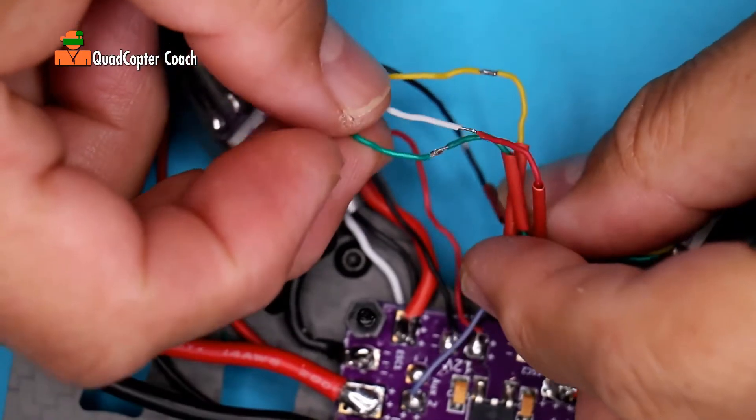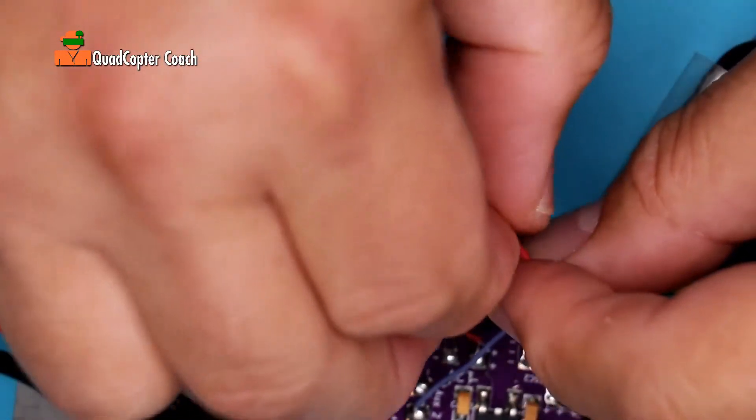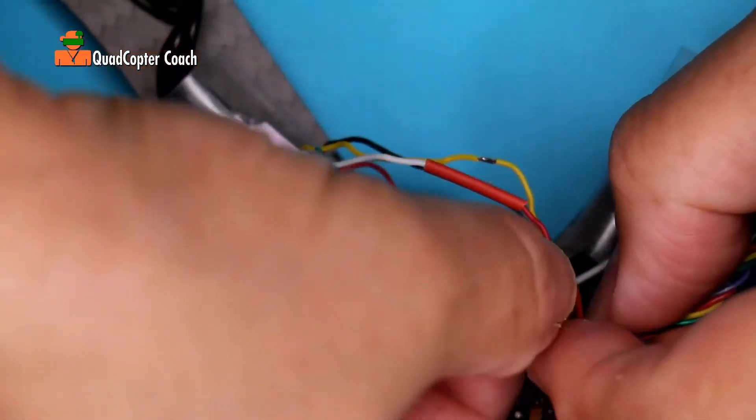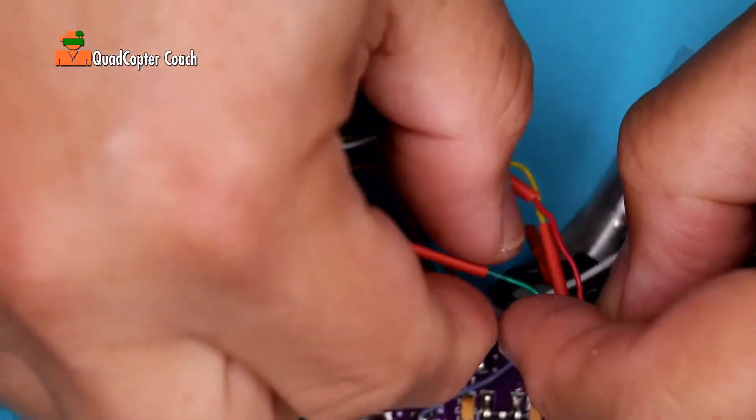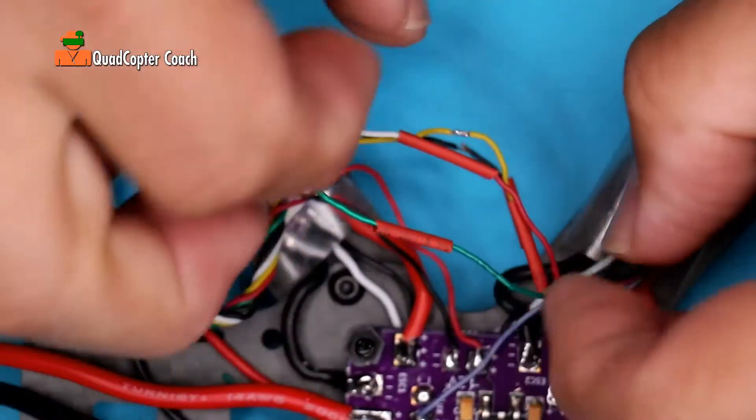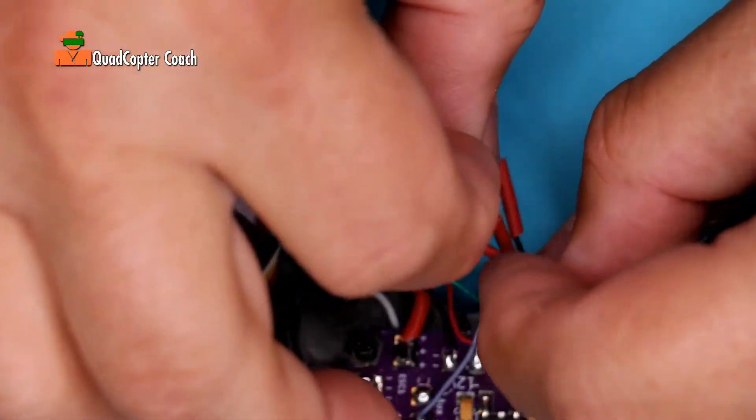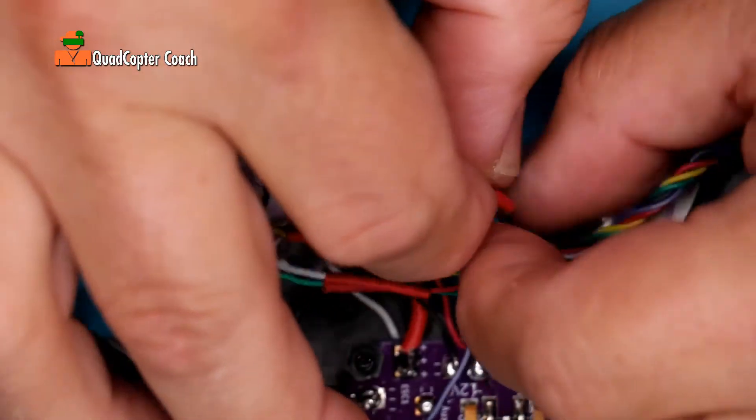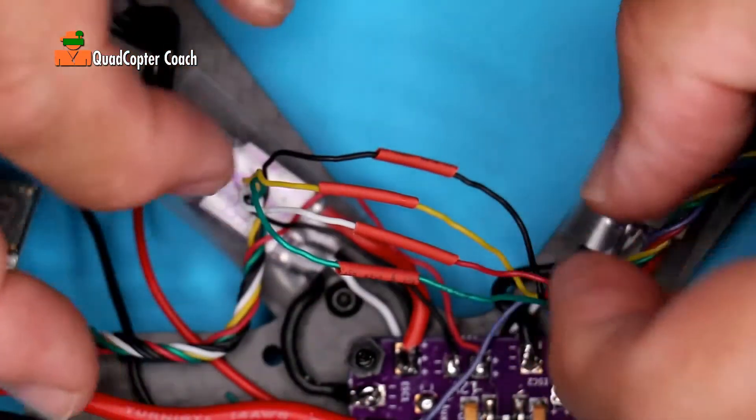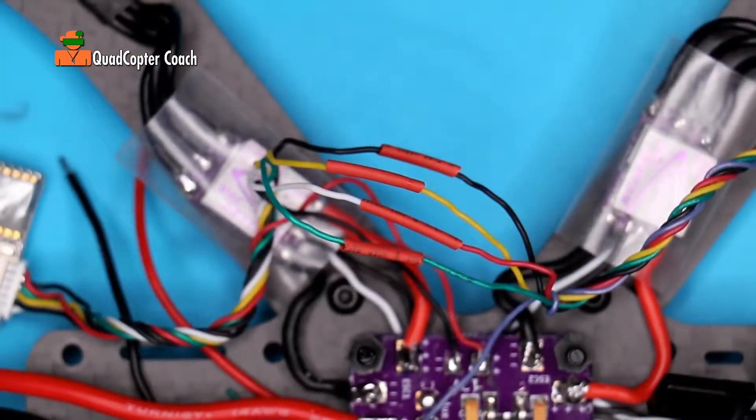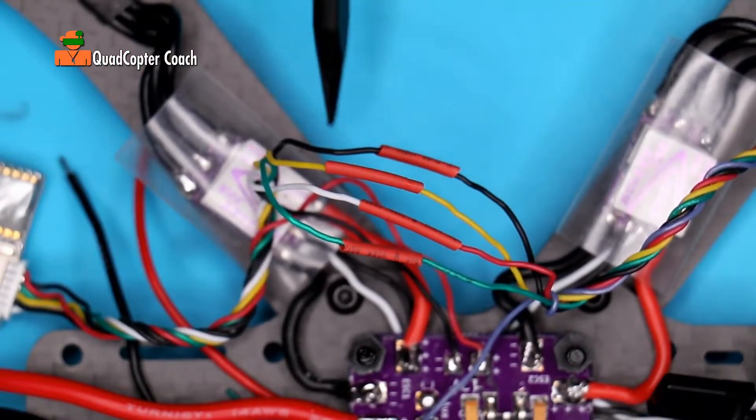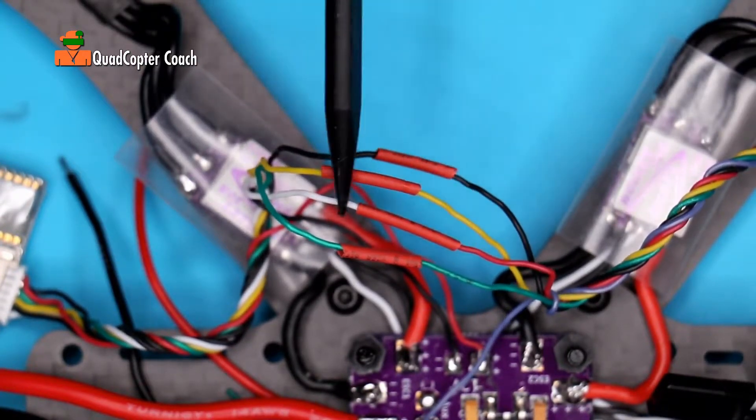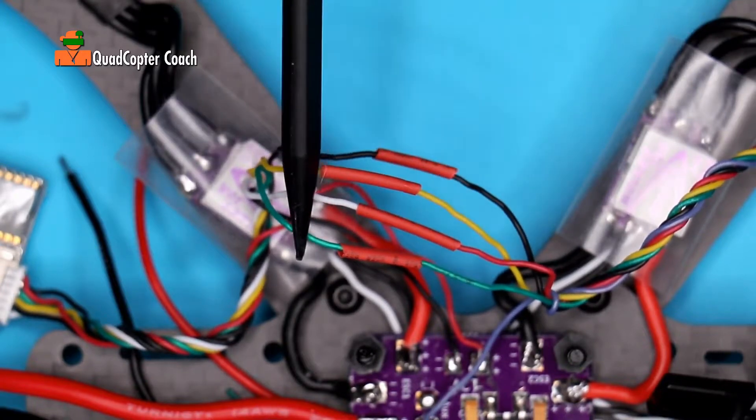Now that we've got all these wires soldered, take the shrink tube and slide it over each of the connections so nothing is exposed. Your wiring bundle should look like this. Black to black, yellow to yellow, red to white, and green to green.